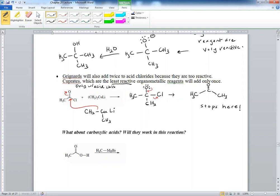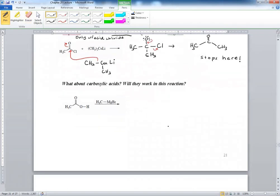So no other carbonyls will react with cuprates. If that's ever written, then you say no reaction. So the question is, what about carboxylic acids? What happens if you react those with, let's say, the Grignard reagents? Will this reaction work?